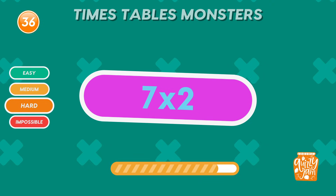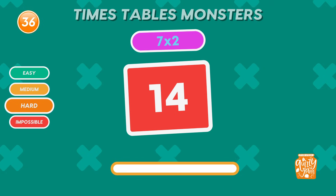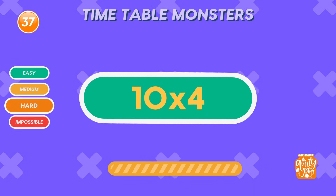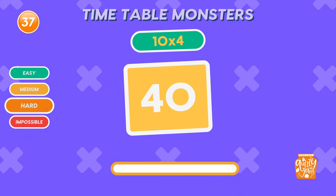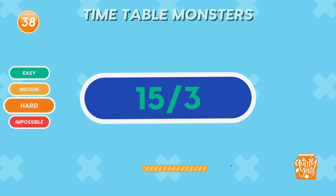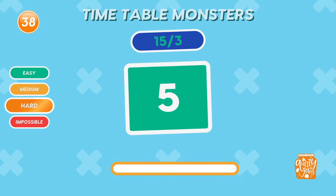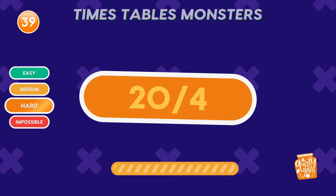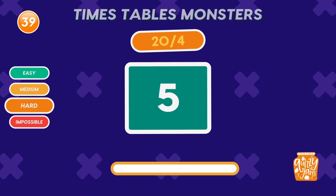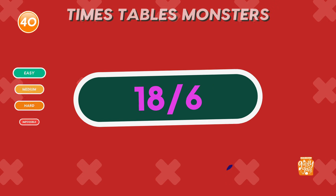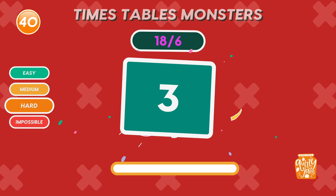What is 7 times 2? 14. You're getting it all right. Like and subscribe if you haven't yet. What is 10 times 4? 40. Outstanding. What is 15 divided by 3? 5. Great job with division. What is 20 divided by 4? 5. Math wizard alert. What is 18 divided by 6? 3. Incredible! You're doing so well!